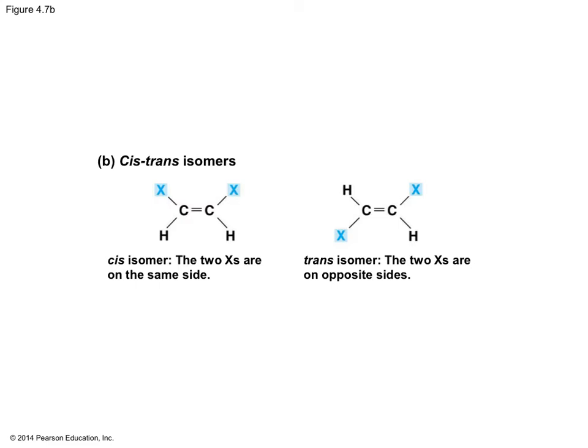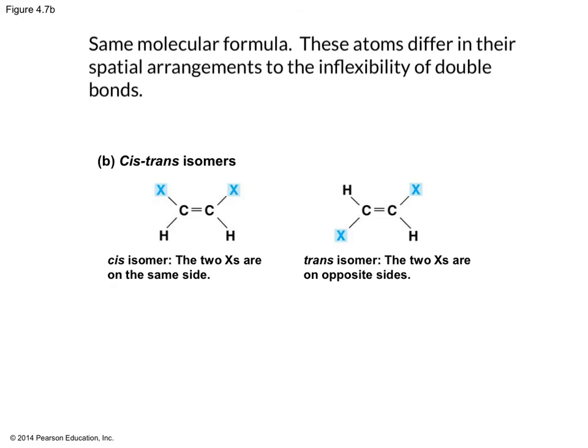The next group are cis-trans isomers. These have the same covalent bonds but differ in their spatial arrangements. These compounds have the same molecular formula, but they differ in spatial arrangements due to the inflexibility of double bonds. Because of the double bond between the two carbons, those pieces cannot rotate, so they're stuck in their configurations. One is a cis isomer, where the two groups are on the same side; the other is a trans isomer, where the two groups are on opposite sides.